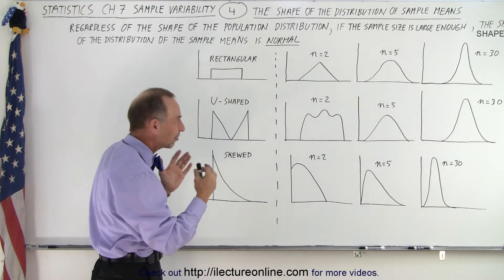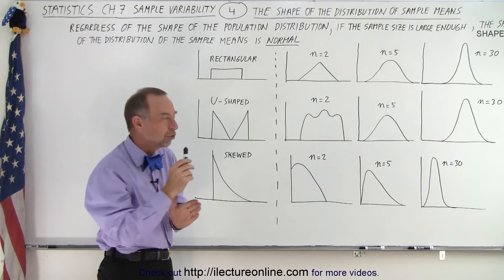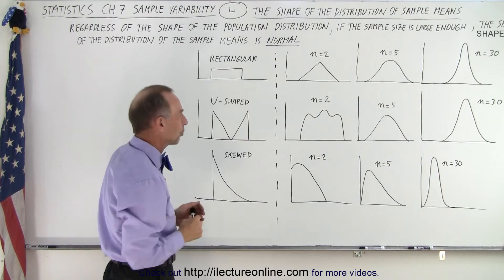If n is large enough, if the sample size is large enough, the distribution of the sample means will always turn out to be a normal distribution.